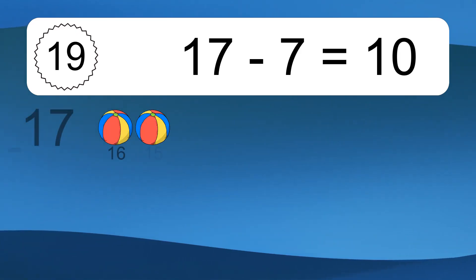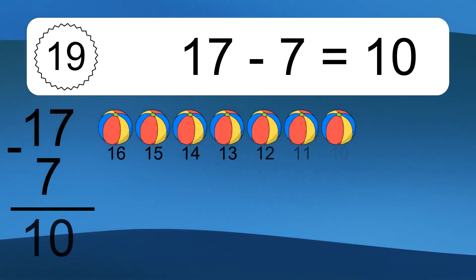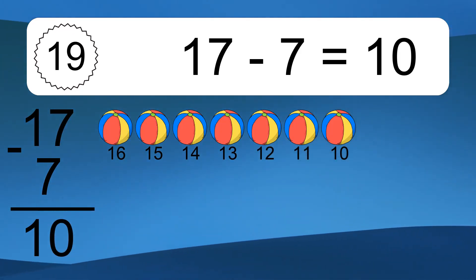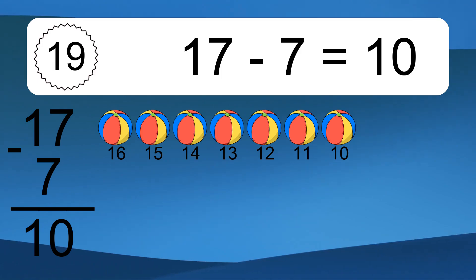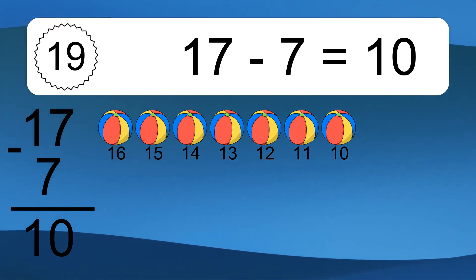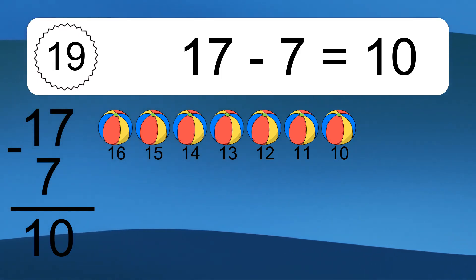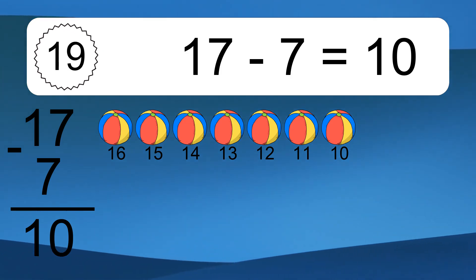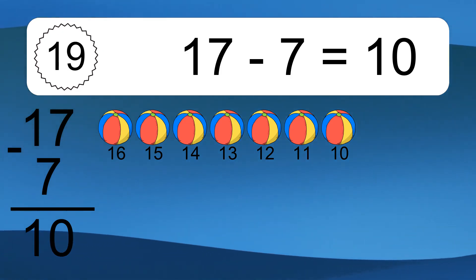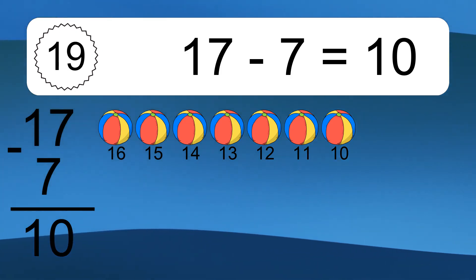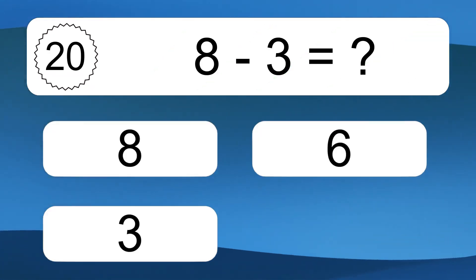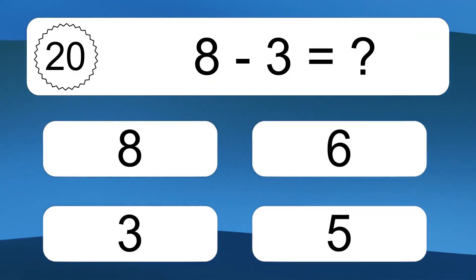17 minus 7 equals 10. Let's count it: 16, 15, 14, 13, 12, 11, 10. 8 minus 3 equals what?